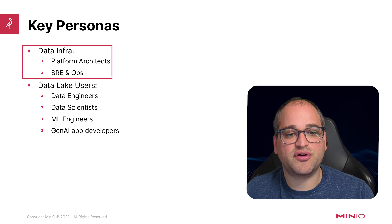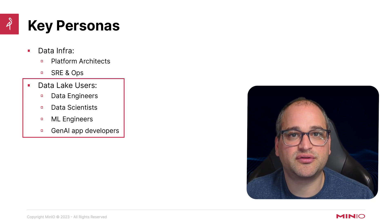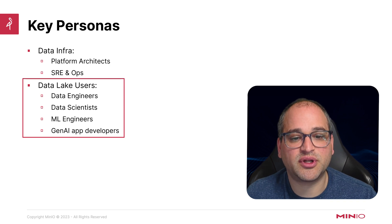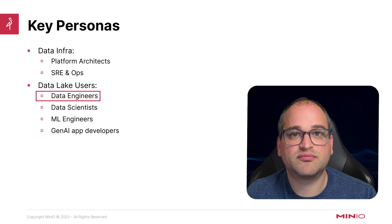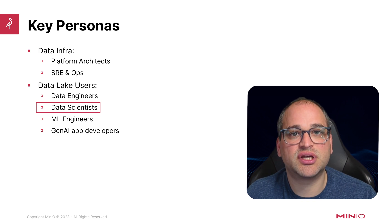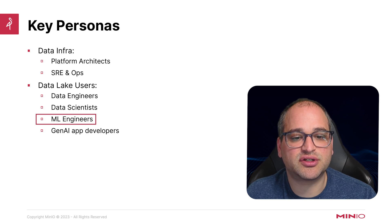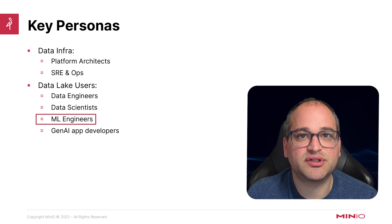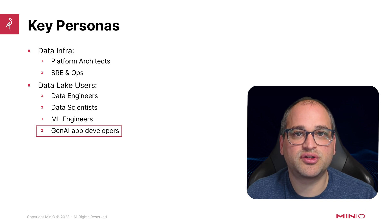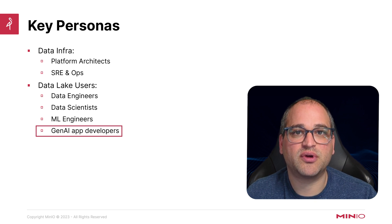The other bucket of personas that will get a lot out of this talk are data lake users — folks who spend day in, day out working in and reliant upon a data lake environment. These include data engineers, who are often building transformation and ETL pipelines; data scientists, who use algorithmic techniques for exploratory data analysis and machine learning modeling; machine learning engineers, who take models the data scientists create and put them into production in mission-critical workflows; and an emerging category of generative AI application developers, who use retrieval augmented generation (RAG) and other techniques to feed data lake content into large language or foundation models.